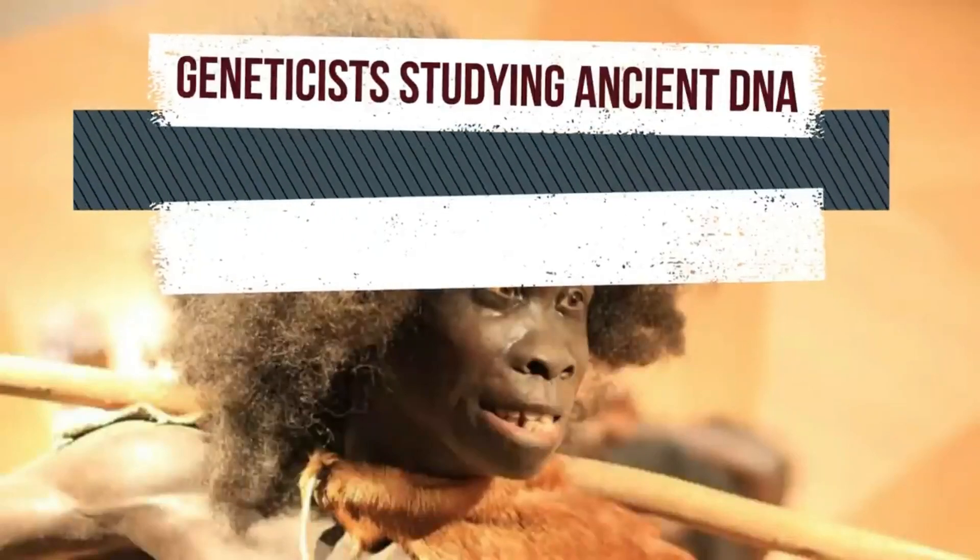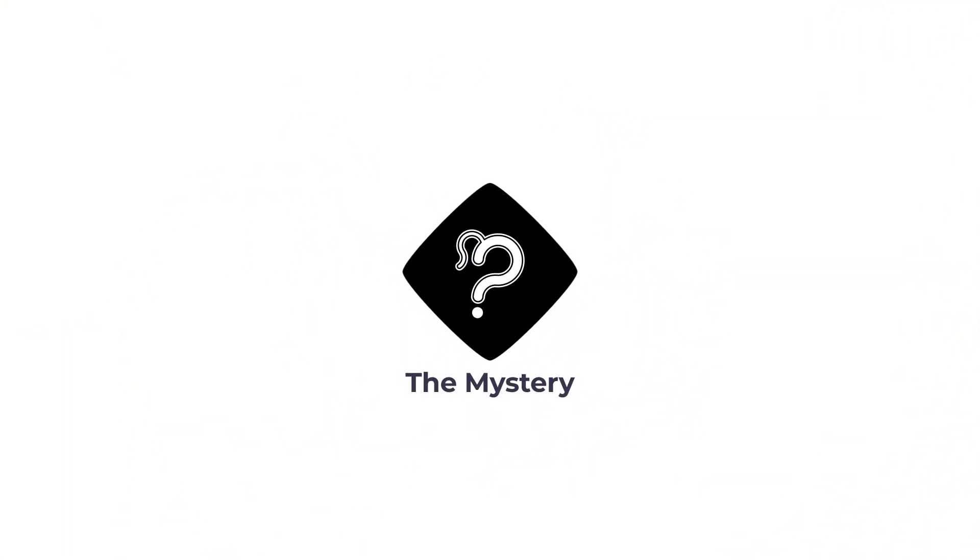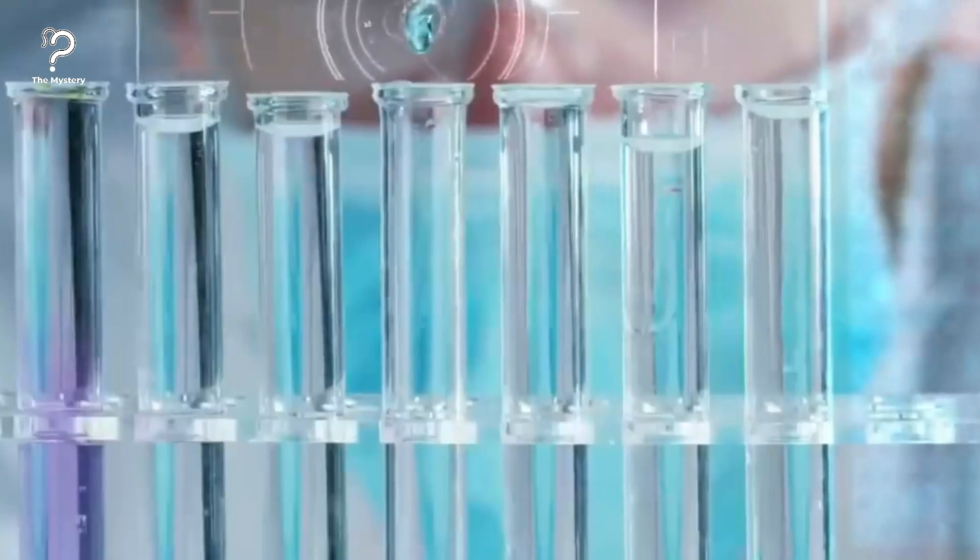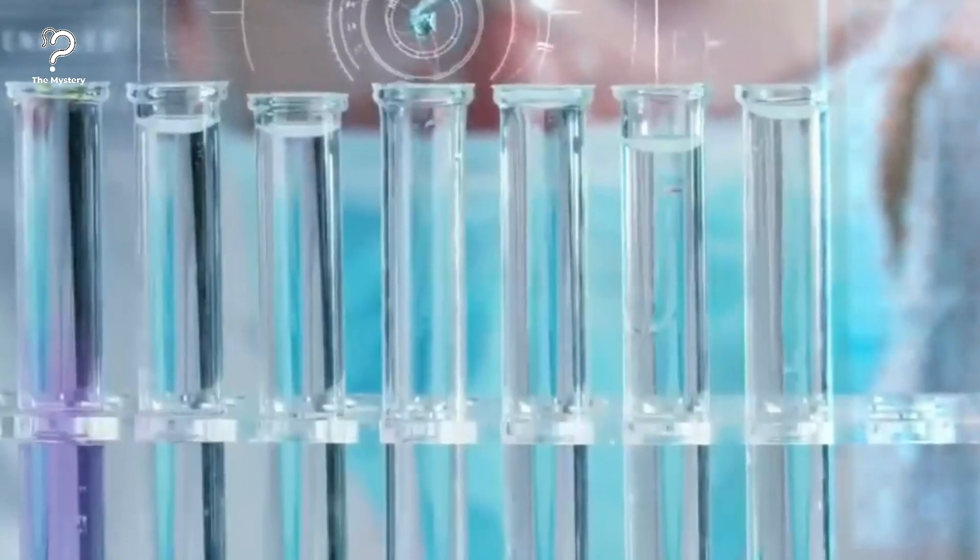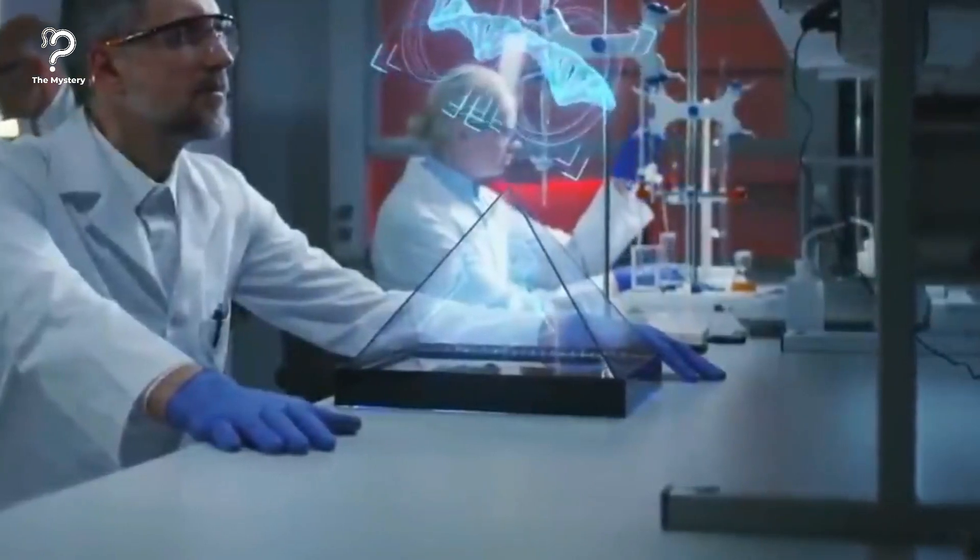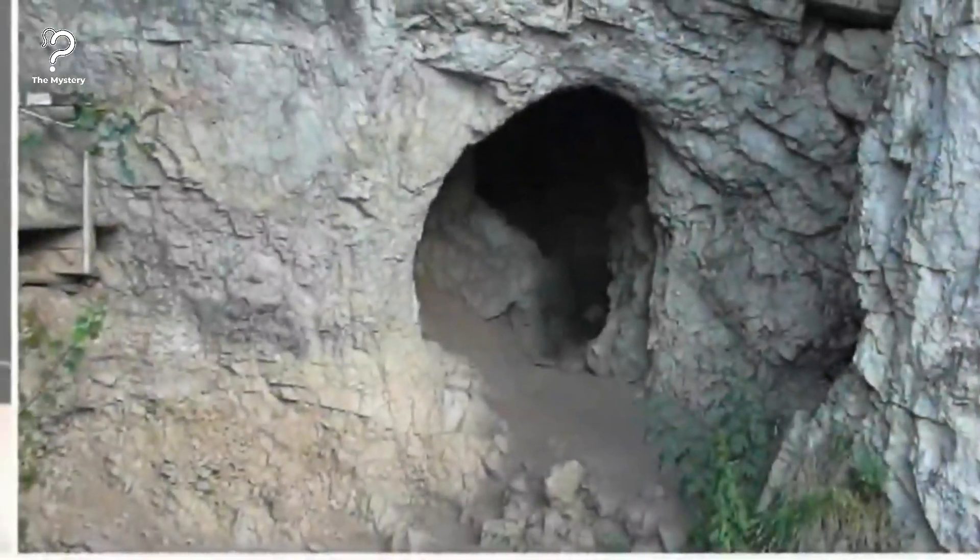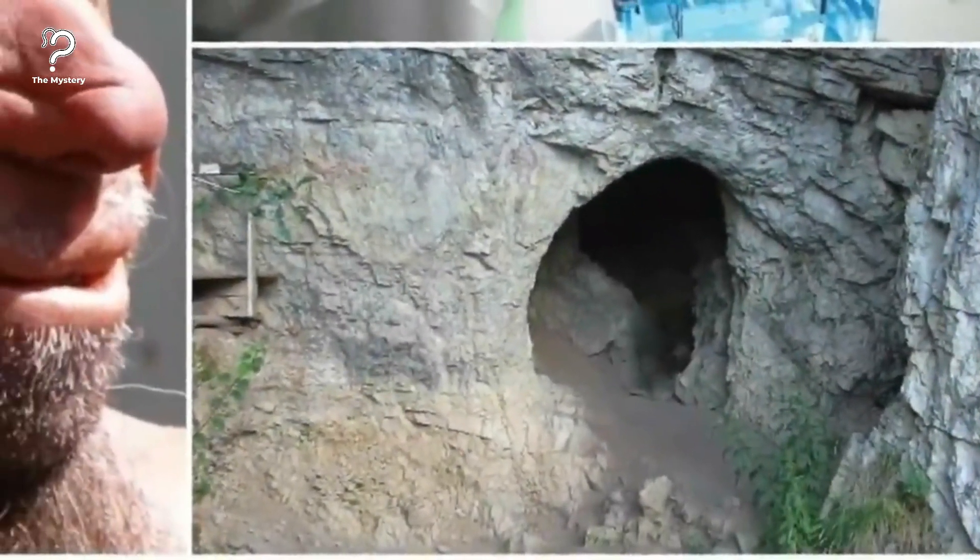Geneticists studying ancient DNA discovered a girl whose parents were two different species. At a laboratory in Leipzig, Germany, a postdoctoral researcher is puzzling over a piece of ancient bone. According to DNA tests, this relic represents something paleontologists specializing in genetics thought they would never find - a hybrid between two of humanity's early relatives.